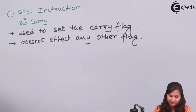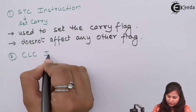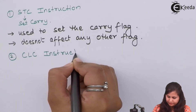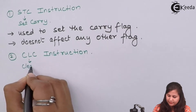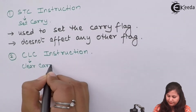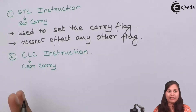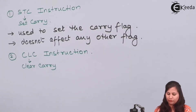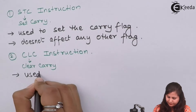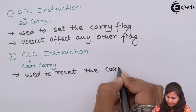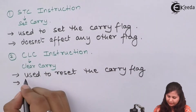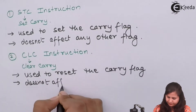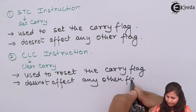The next instruction is CLC — Clear Carry. This instruction resets the carry flag, meaning its value will be made zero. This instruction also does not affect any other flag.